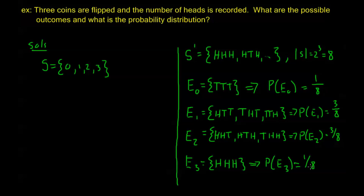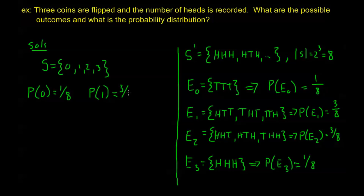Coming back to the question: the possible outcomes are zero, one, two, or three heads. The probability distribution is: P(0 heads) = 1/8, P(1 head) = 3/8, P(2 heads) = 3/8, and P(3 heads) = 1/8.